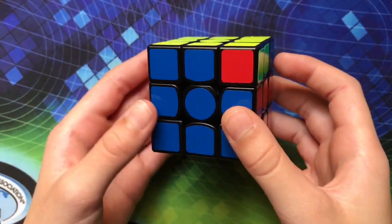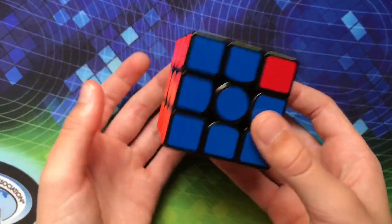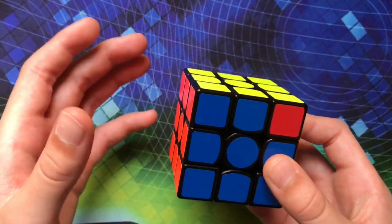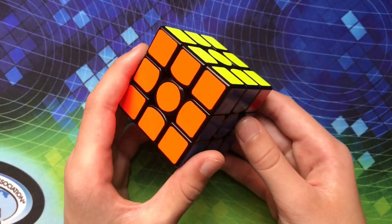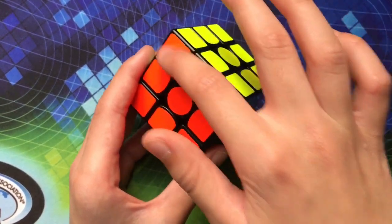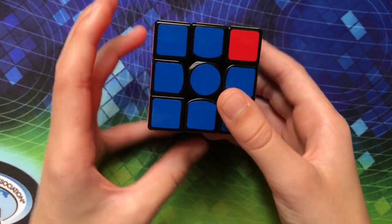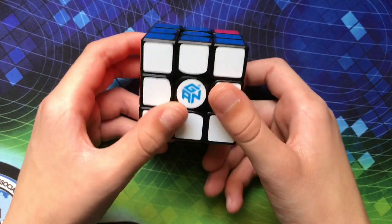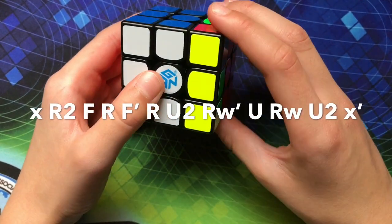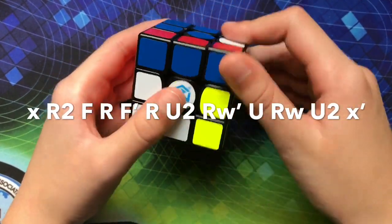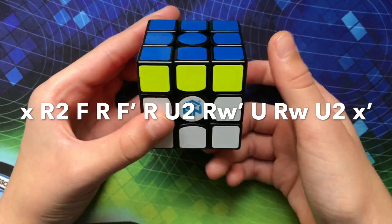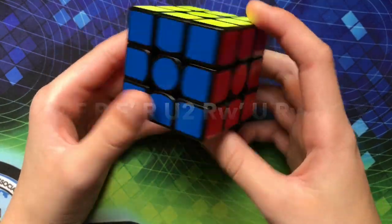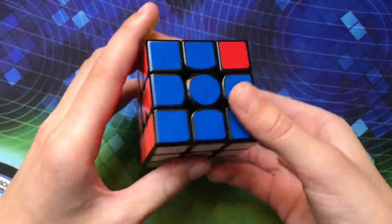Okay so this next algorithm is actually the one that I use currently. I don't know if I'm going to switch to any of the other ones but this is just the one that I use right now. So I hold it like this with the bar on the left again. And then you do X R2 F R F' R U2 Y R' U Y R U2 X'. So here's that one a little bit quicker.